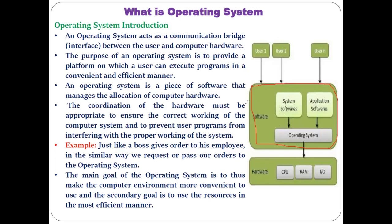These hardware components form your system, but in order for the system to run, if there is no system program like an operating system, these hardware components cannot communicate with each other. As a result, you cannot get any output — your computer system cannot work, you cannot get any display. So if you want all the hardware components of your system to communicate with each other, they need a particular system program, and the name of that system program is the operating system.